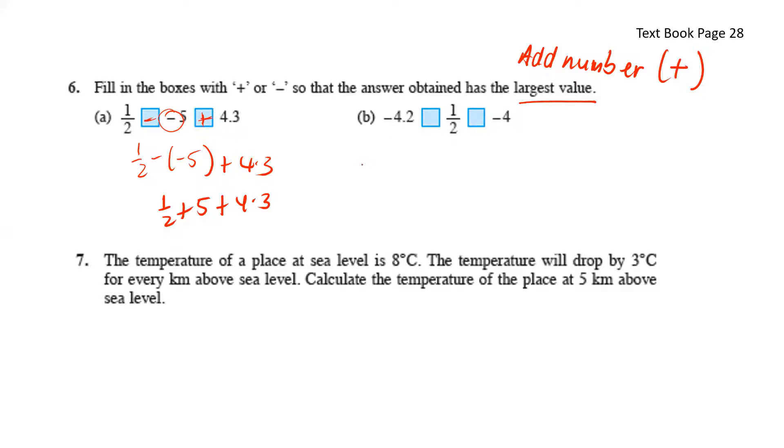Next for b, we have negative 4.2. Since we want to add numbers, we'll have to put a positive here, positive 1 over 2. And since here there's a negative number, we'll have to make it positive by putting another negative here. So minus negative 4 gives us negative 4.2 plus 1 over 2, negative, negative, positive. So here we'll have quite a larger number.